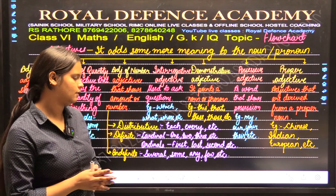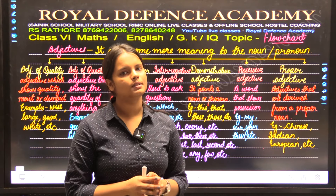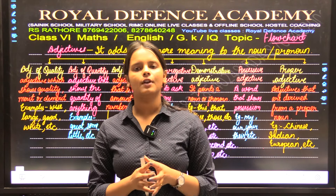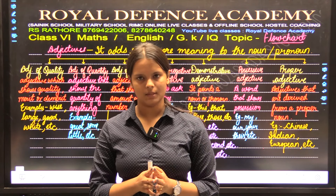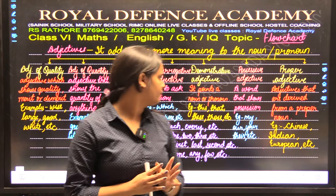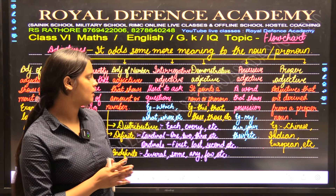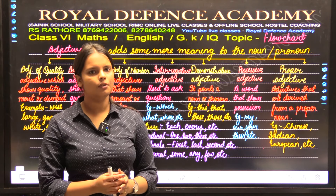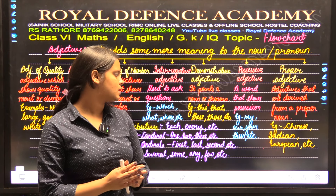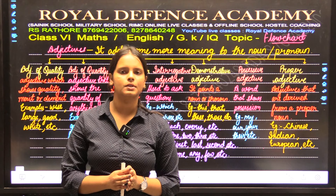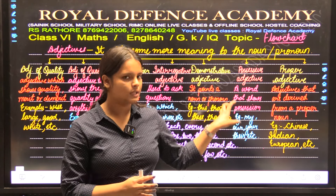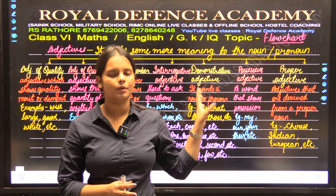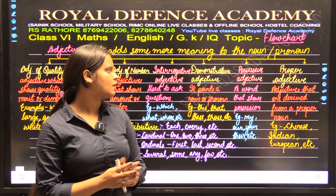Next is possessive adjective. Possession is related to the ownership of noun and pronoun — who is the owner, to whom does the noun or pronoun belong. Examples are my, our, your, their. My shows possession of I, our shows possession of we, your shows possession of you, and their shows possession of they. These are possessive adjectives telling us who is the owner of the noun and pronoun.